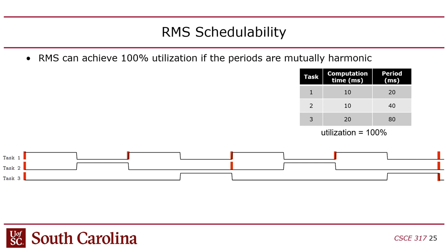There is a caveat: if all periods are mutually harmonic — meaning any two tasks have periods where one is a multiple of the other — then you can actually use RMS to achieve 100% utilization. For example, periods of 20, 40, and 80 are mutually harmonic. But that's rarely the case; usually the periods are not harmonic and depend on the controller design.